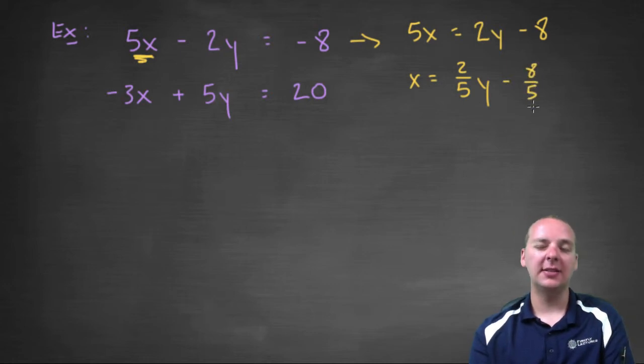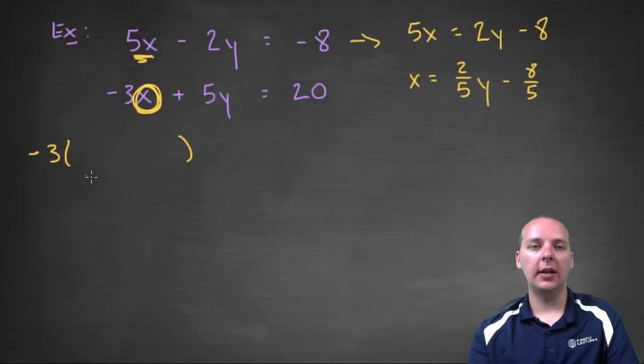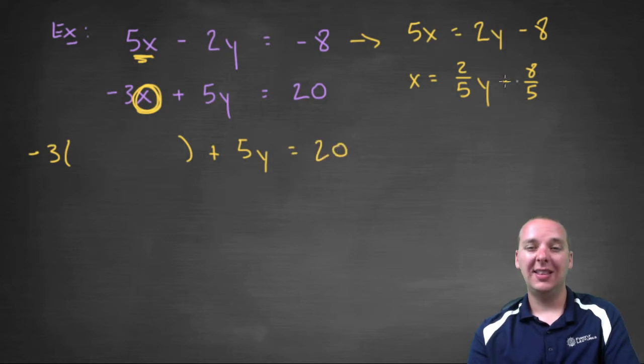Take this for x and stick it in for x in the other equation. We'll have -3 × x, that's the way I like to do it, just leave a big empty blank, plus 5y = 20. Take that expression for x and plug it in: -3(2/5 y - 8/5).